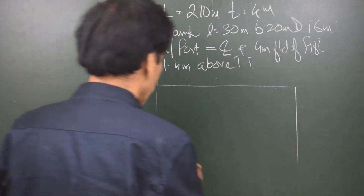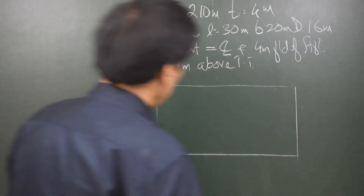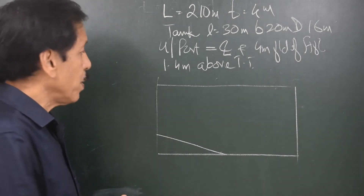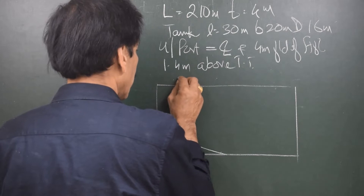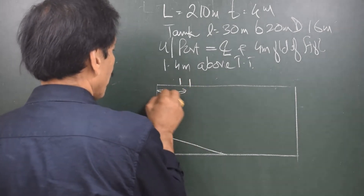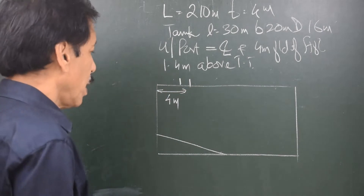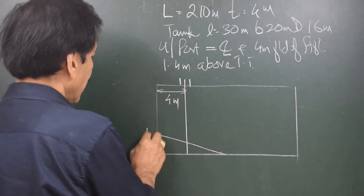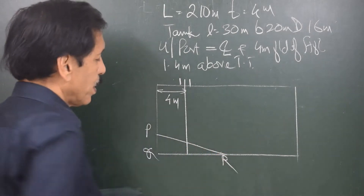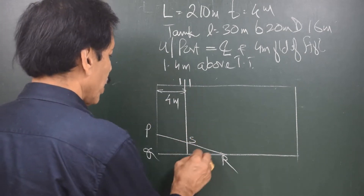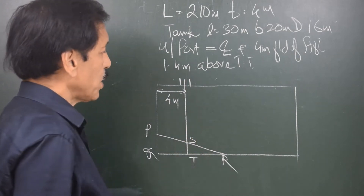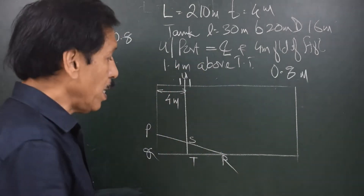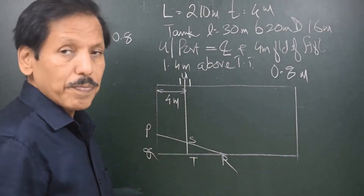Now let us look at the tank shown in side elevation — here is the wedge formed. I have exaggerated the slope of the wedge, but as you see in the fore-and-aft view, this distance from the aft bulkhead is 4 meters. There is a measurement perpendicular to the deck, and let us say the wedge is PQR; from here to here is ST and this is U.